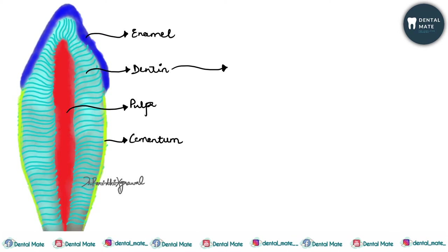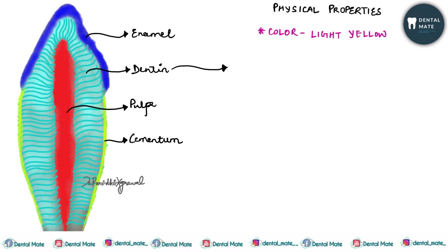Dentine is a hard tissue with tubules throughout its thickness. It determines the shape of the crown and the number and size of the roots. It is a vital tissue — it has living protoplasm. Now let's talk about the physical properties of dentine.